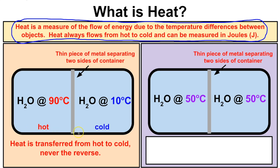Let's suppose we have a styrofoam container with equal masses of water on the left and right sides, separated by a thin piece of metal — and we know metal conducts heat. On the left side we have water at 90 degrees Celsius, almost boiling, and on the right side we have water at 10 degrees Celsius, almost freezing. What happens if we set this container aside for a couple of hours?